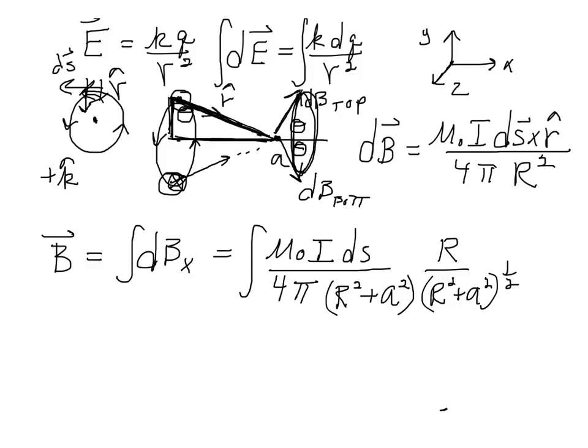Okay, so that's our dB x. We're going to integrate all of those, and our total B at this point a, remember what we're doing, equals the integral of all the dB x's. So the B is the B x. We already said that. All the y, z components cancel in pairs. Only the B x's survive.